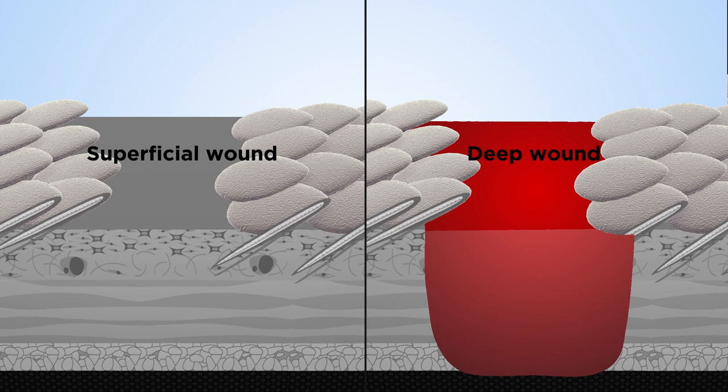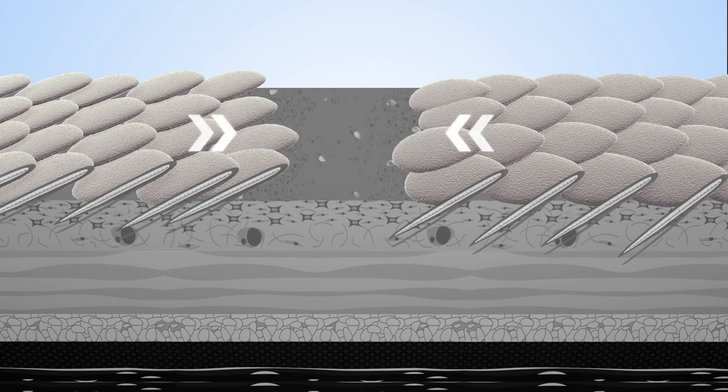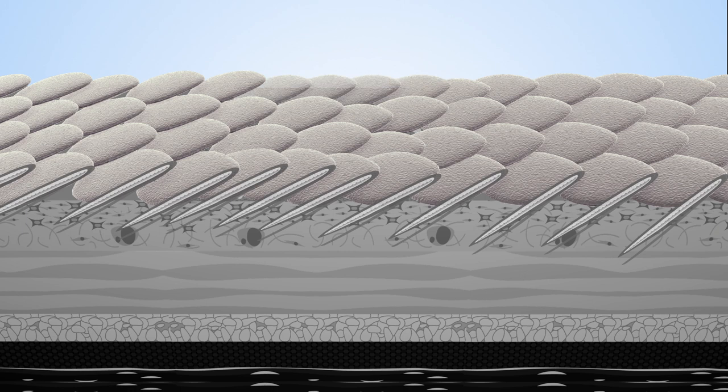Two healing processes are dependent on the type of wound the fish experiences. Superficial wounds heal rapidly. The keratocytes in the epidermis move across from both sides of the wound and scales regenerate.